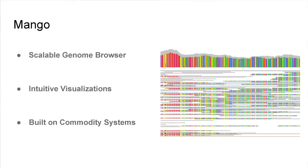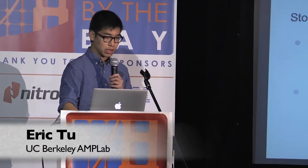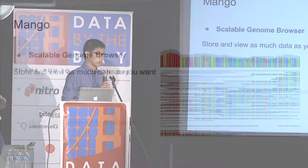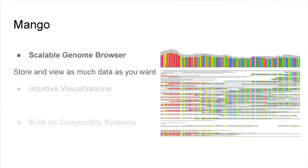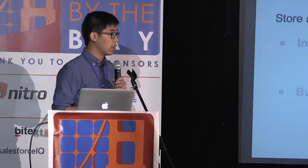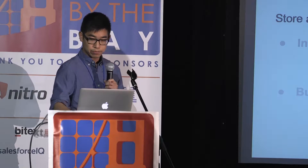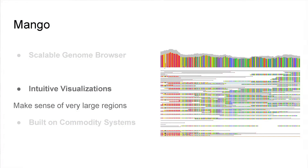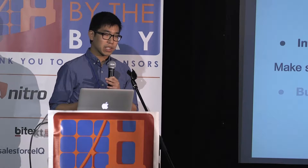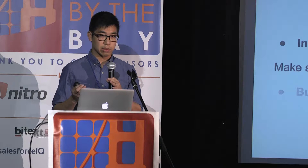We set out to make a genome browser that scales, and this is our work — it's called Mango. It scales so you can run on a cluster and store as much data as you want, whether 100 gigabytes or a few terabytes. With distributed computing, we can compute over much larger regions and return that information much faster. We use this additional compute power to look at very large summary statistics and provide visualizations for that.